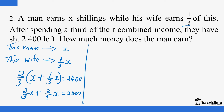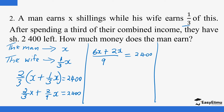We find the LCM to combine these like terms — they contain the same variable raised to the same power. The LCM of 3 and 9 is 9. Three goes into 9 three times: 3 × 2 = 6, so we write 6x. Nine goes into 9 once: 1 × 2 = 2, so we write 2x. This equals 2,400.